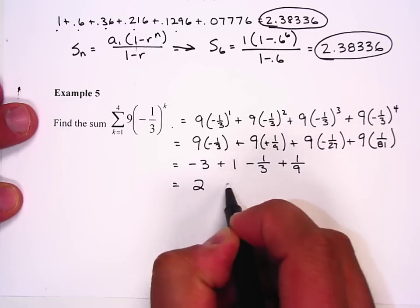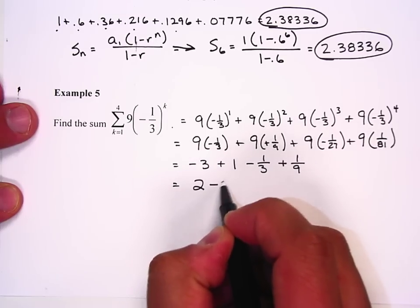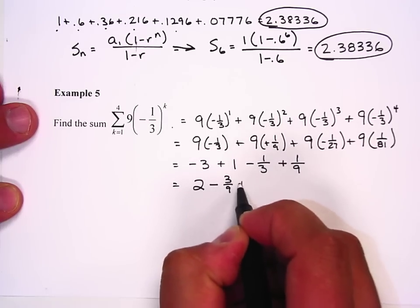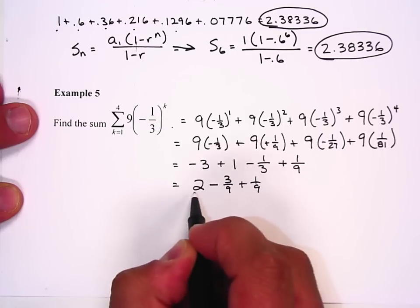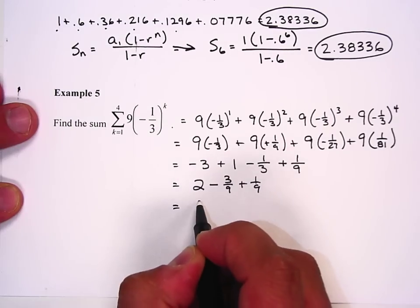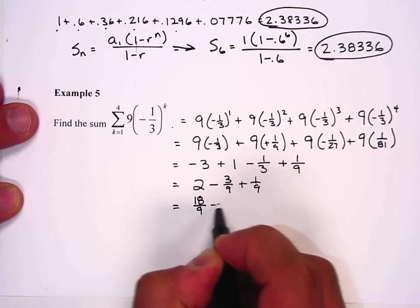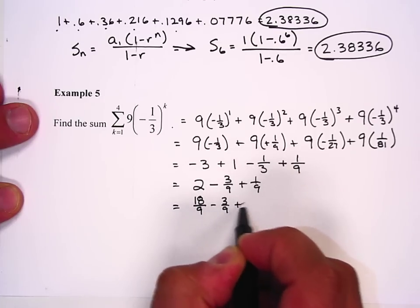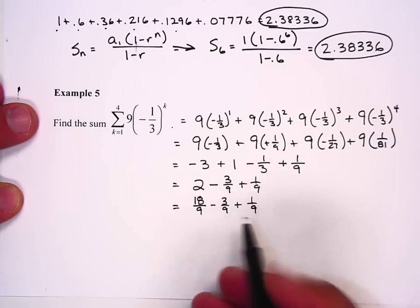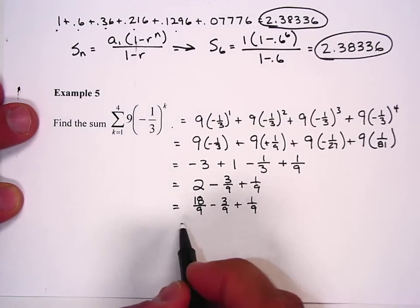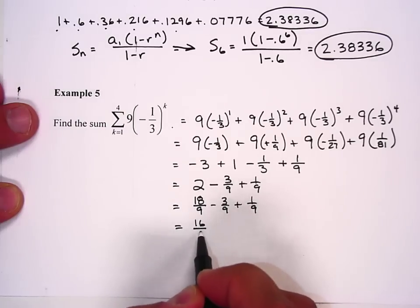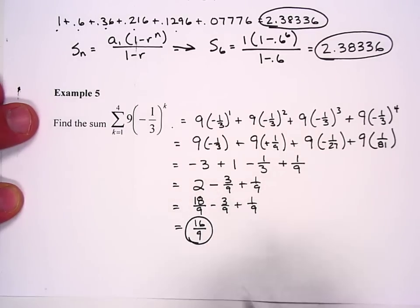I'm going to get, let's say this is 18/9 - 3/9 + 1/9. 19/9 - 3/9 is 16/9, which is our solution.